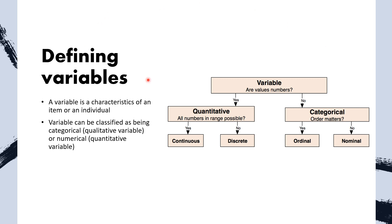Moving on to defining variables: a variable is a characteristic of an item or an individual. Variables can be numbers or values. We divide variables into two categories: qualitative or quantitative. Qualitative variables are also called categorical. In a categorical variable, order may matter — it can be ordinal or nominal.